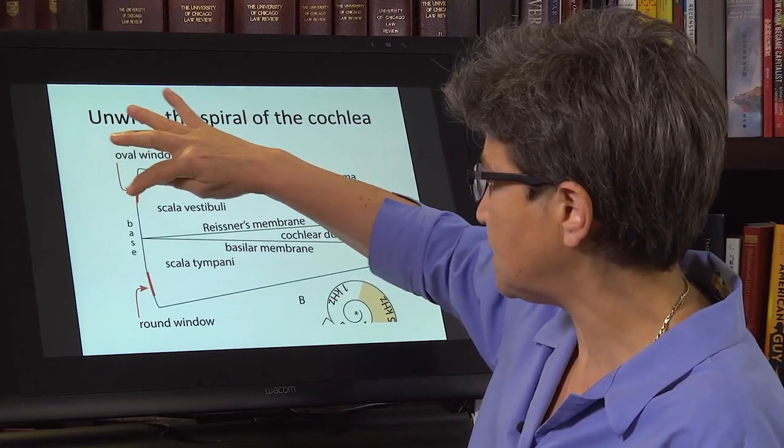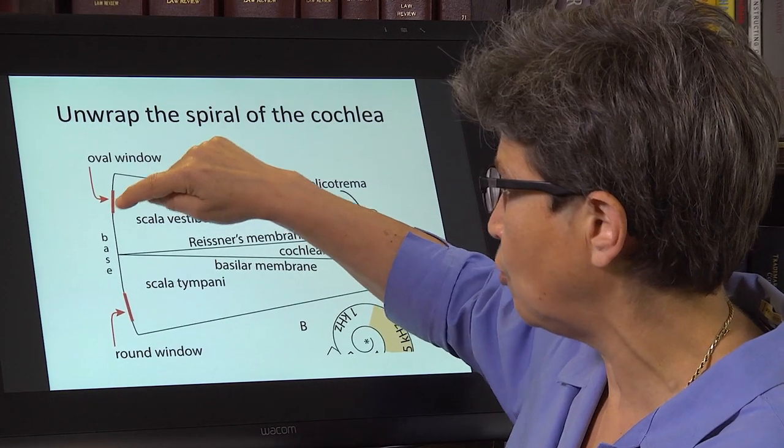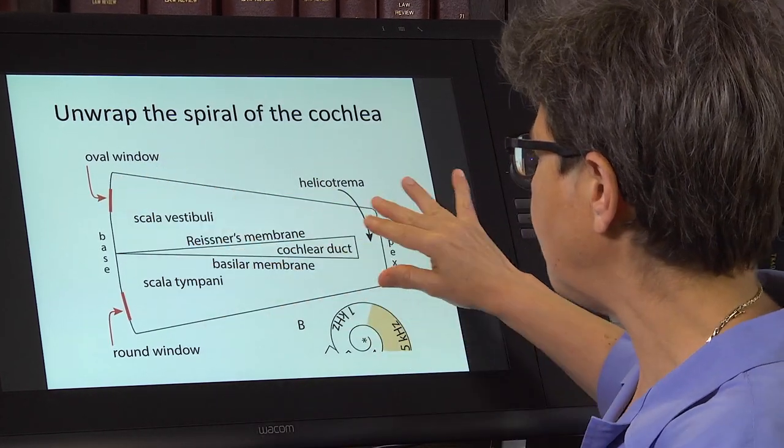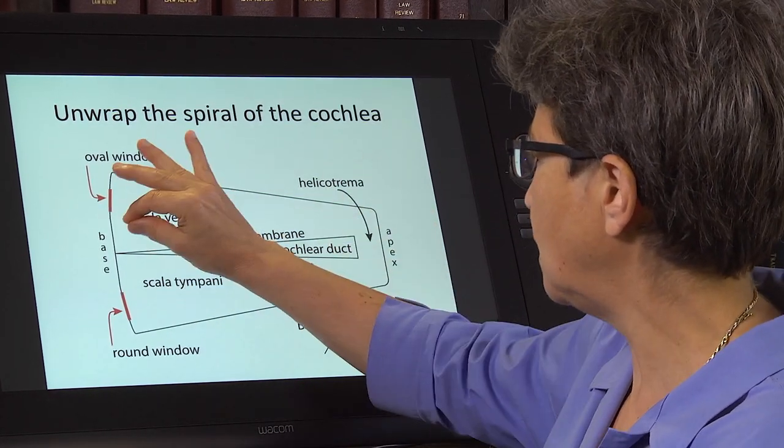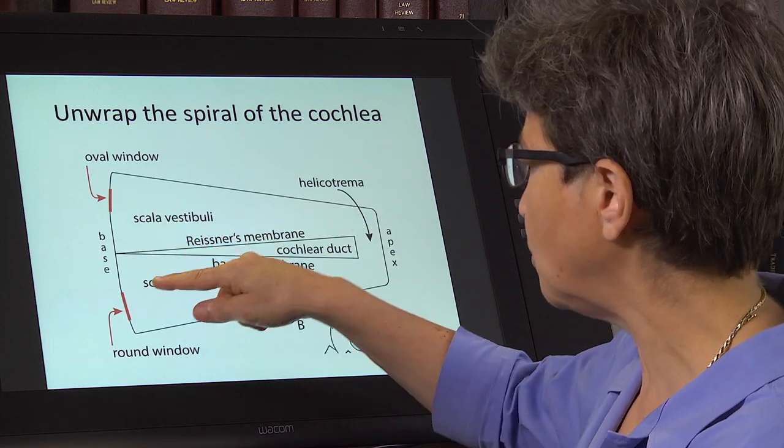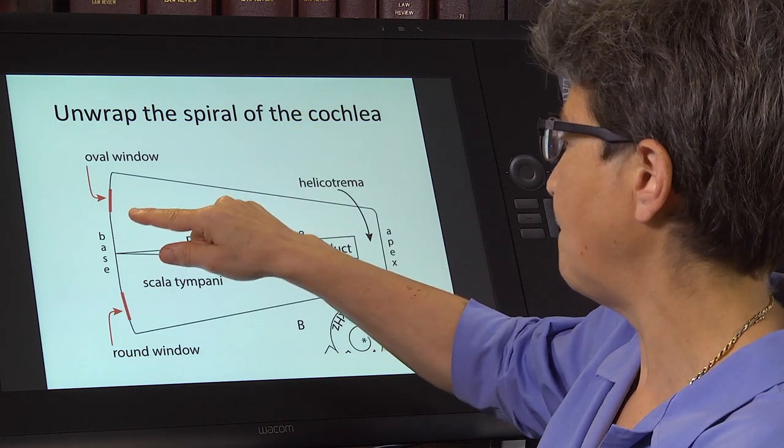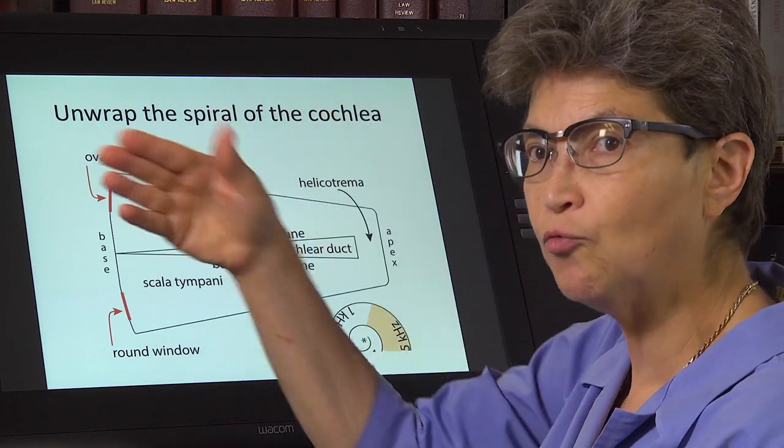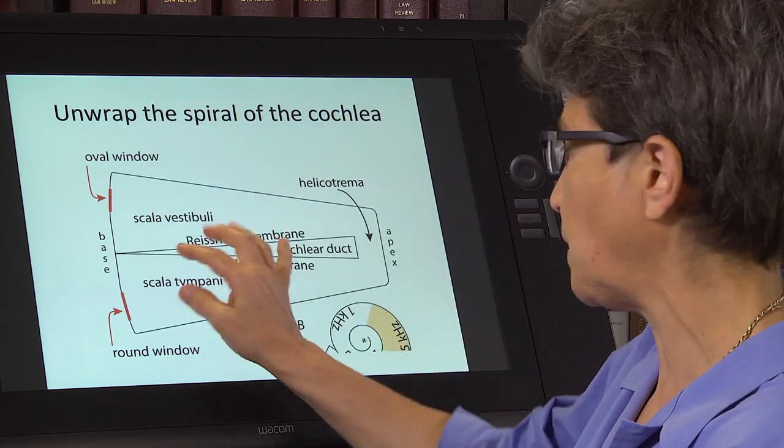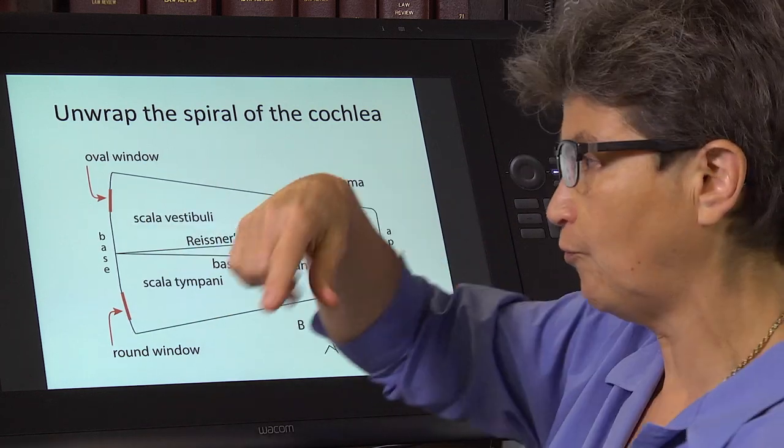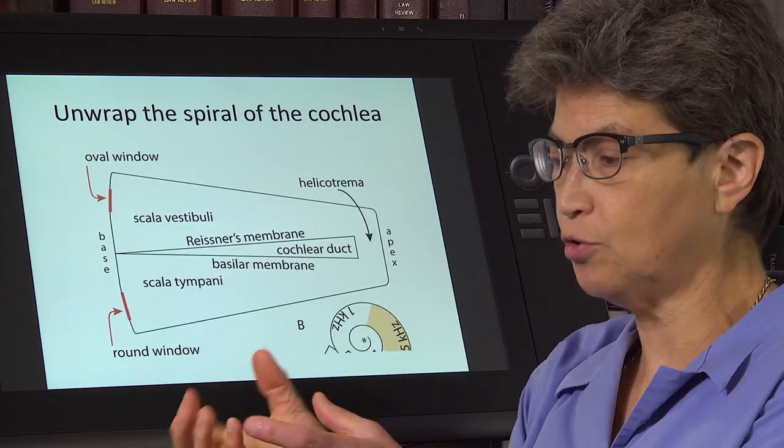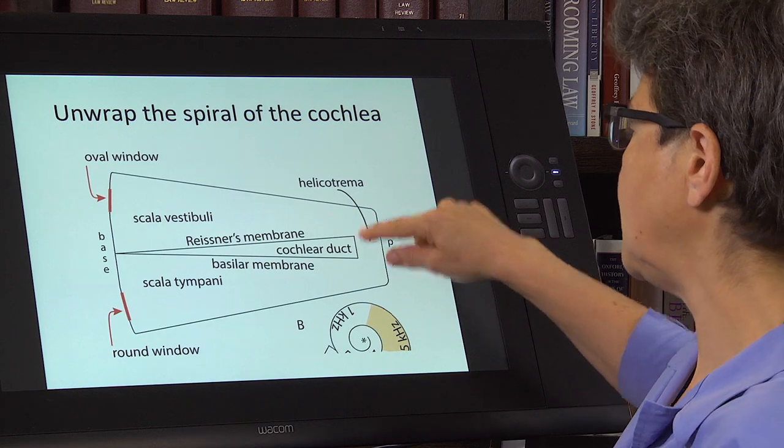We've got our stapes that is banging here on the oval window. This is a fluid-filled spiral, and it's a spiral that comes up like this, but I've unwrapped it. I've unrolled the spiral, so I'm rolling it out from the base of the cochlea all the way up to the apex.